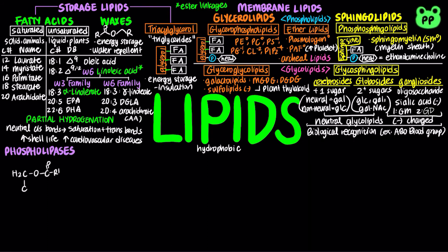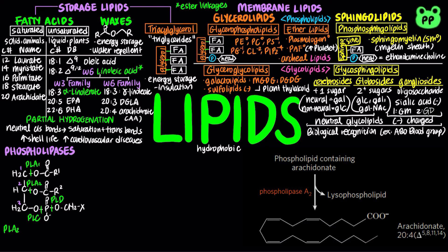Phospholipases hydrolyze specific bonds in glycerophospholipids. Phospholipases A1 and A2 hydrolyze the ester bonds at carbon-1 and carbon-2 of glycerophospholipid, respectively, releasing free fatty acids. Phospholipase C hydrolyzes the phosphoryl head group from the glycerol backbone, whereas Phospholipase D hydrolyzes just the head group from the phosphoglycerol backbone. When Phospholipase A2 cleaves membrane phospholipids, it releases arachidonic acid, which is a precursor to eicosanoids.